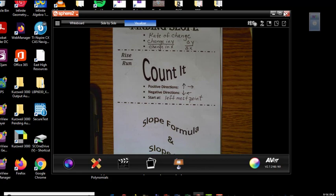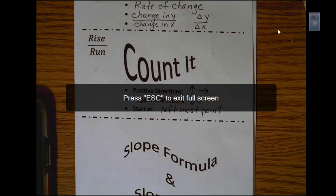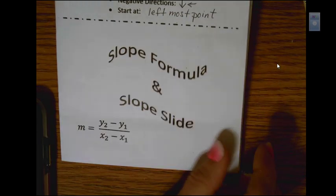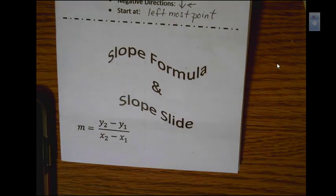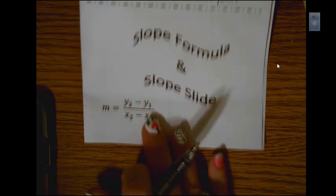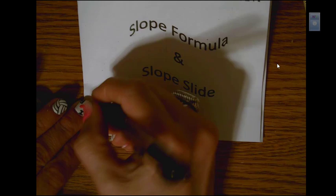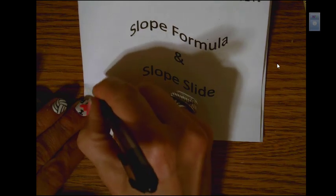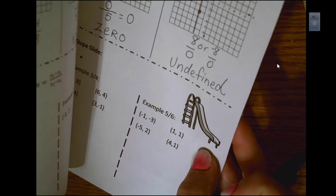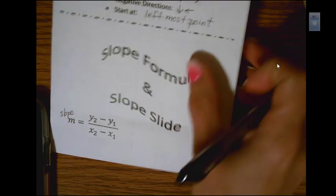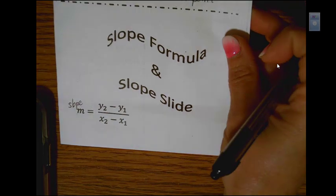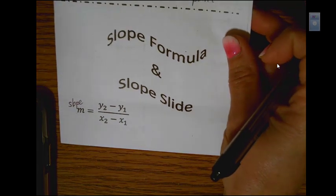Of our slope segment. And this time we are going to just use a formula when we are given two points. Now the formula we're going to use, M, we use in math to represent slope. And we're going to use the formula y2 minus y1 over x2 minus x1.